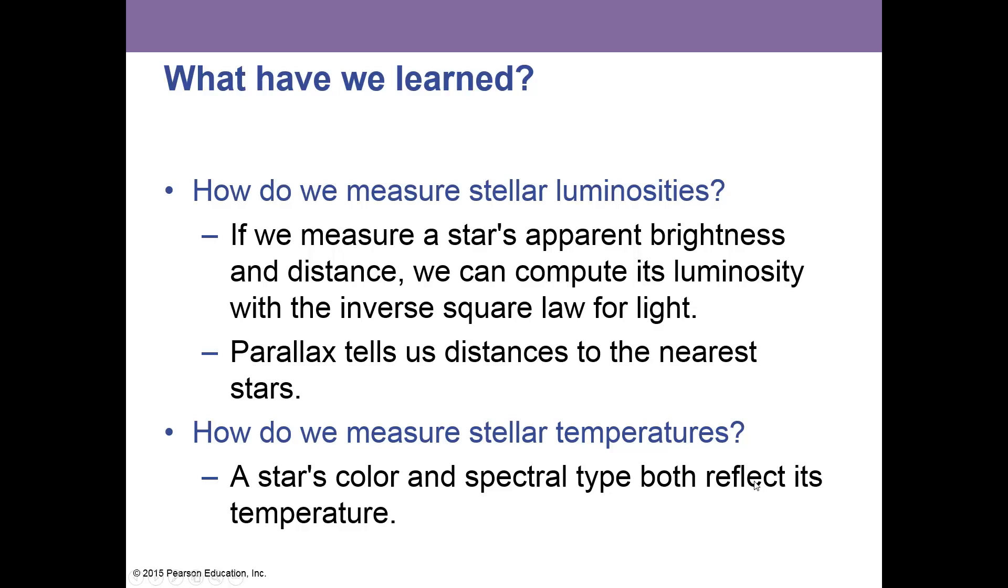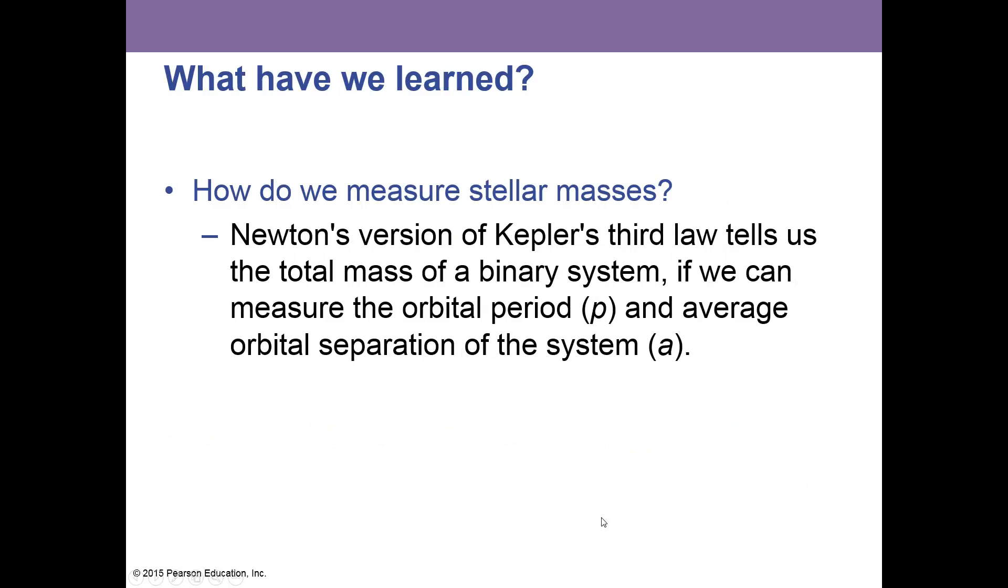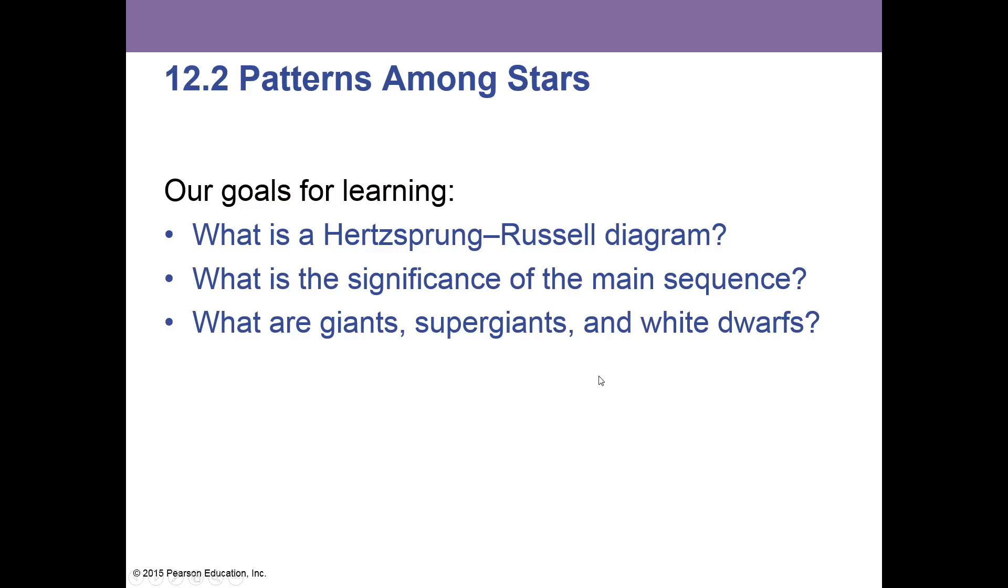So we learned that if we measure a star's apparent brightness and distance, we can compute its luminosity with the inverse square law for light. A star's color and spectra type both reflect its temperature. Newton's version of Kepler's third law, that we saw a few weeks ago, tells us the total mass of a binary system if we can measure its orbital period and average separation of the system in the orbit.